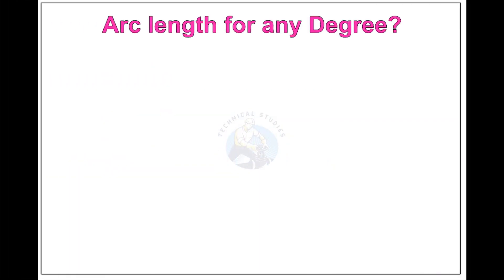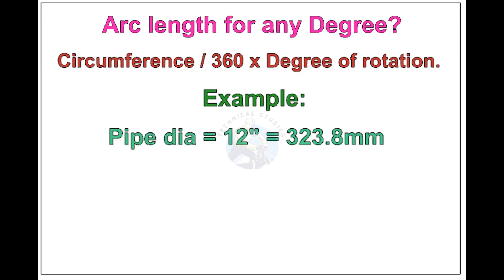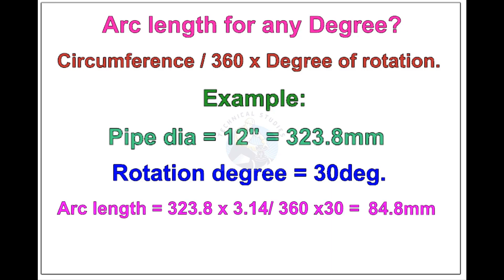Arc length of any degree: Circumference of the pipe divided by 360 into the degree of rotation. Let us check the arc length of 12 inch pipe rotated 30 degree. Apply the formula. The answer is 84.8 millimeters.